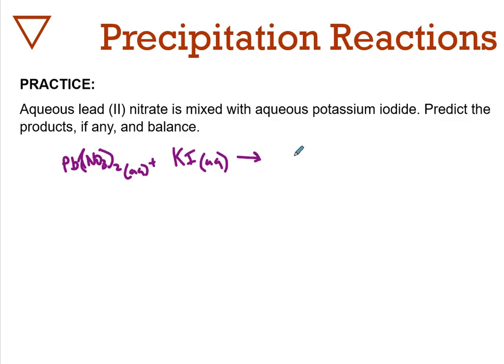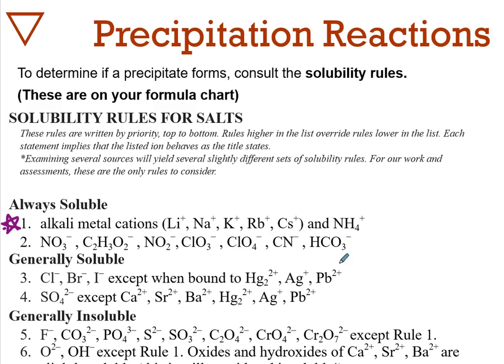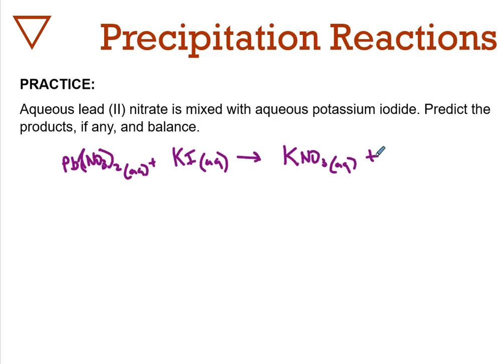The products would be potassium nitrate, KNO3, which is aqueous because rule one states all alkaline metal salts are soluble. The other product would be lead iodide, PbI2, because lead is two and iodide is minus one. Now we need to look up whether it's aqueous or not.